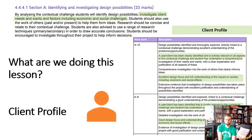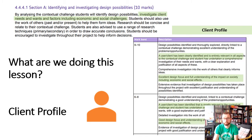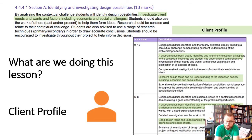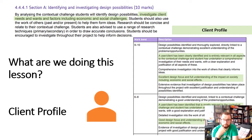So what we're doing this lesson is the client profile. I've highlighted the bits of the mark scheme that this links to. For 9 to 10 marks: a user or client has been clearly identified and is entirely relevant in all aspects to the contextual challenge, and the student has undertaken a comprehensive investigation of their needs and wants, with clear explanation and justification of all aspects of these.